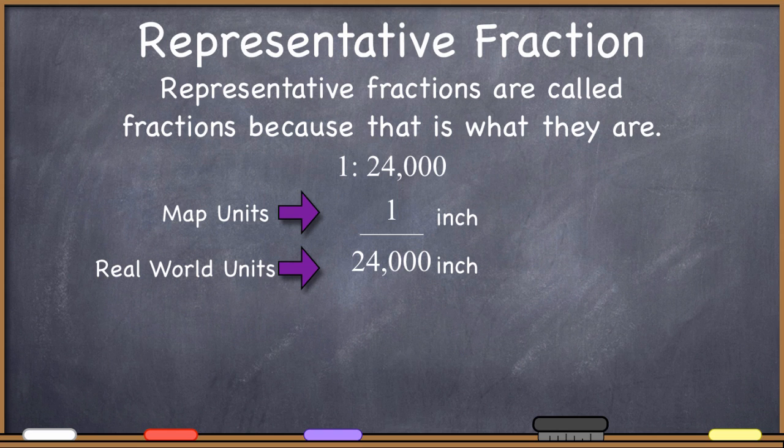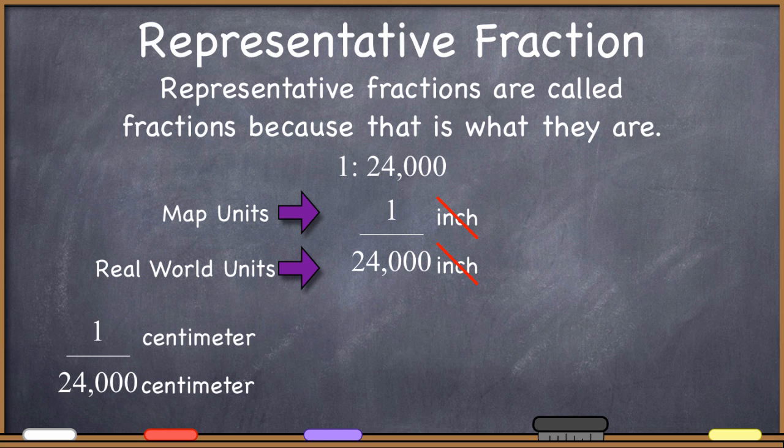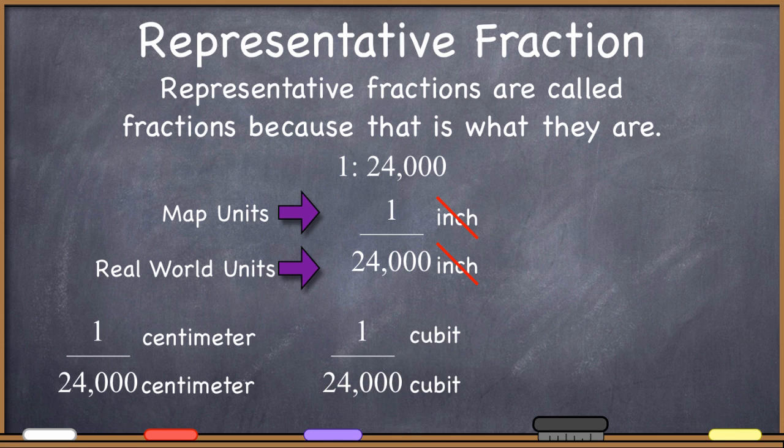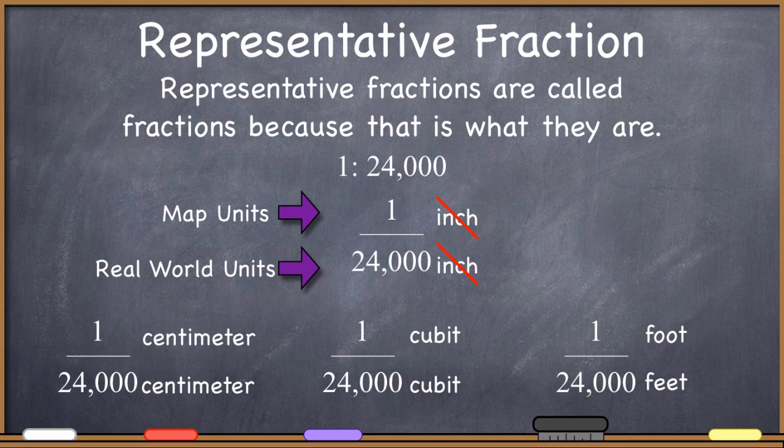When you write it like this, you can easily see why the representative fraction is unitless. If I put inches in the numerator and inches in the denominator, then they cancel out. Because I can cancel anything in the numerator and denominator, leaving me with this unitless measure. I can add back in whichever I prefer. As long as I write the same unit on the top and bottom, I will create a valid representative fraction, a valid statement of the scale.